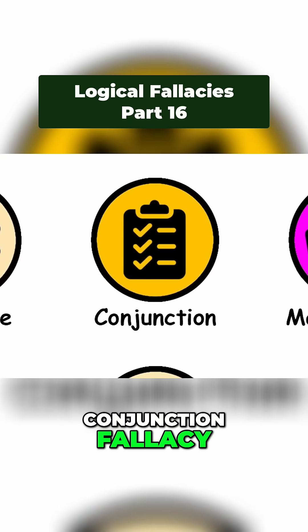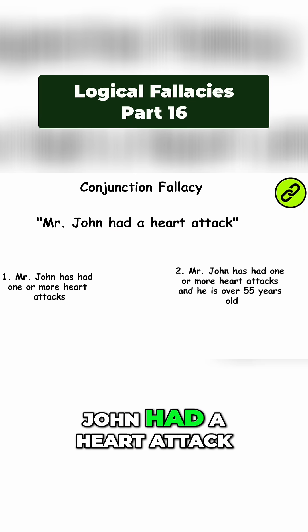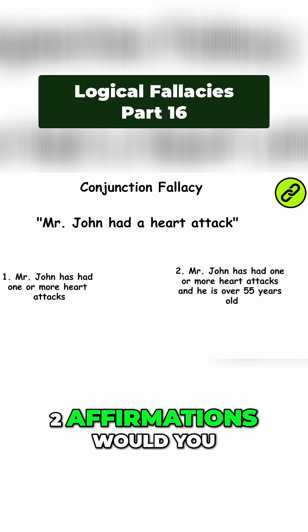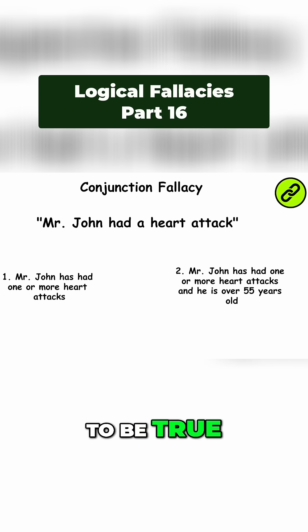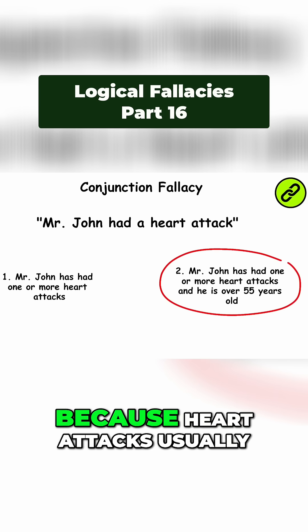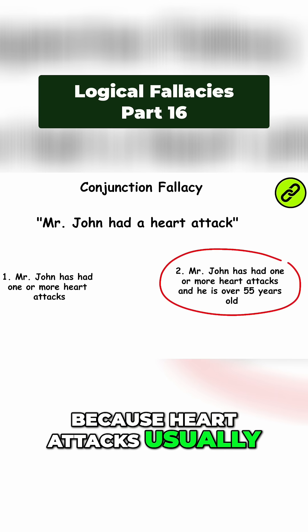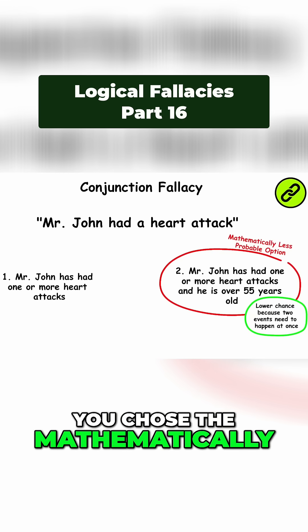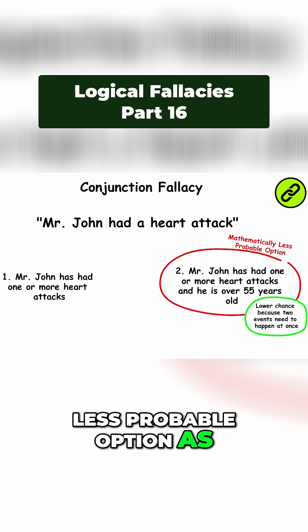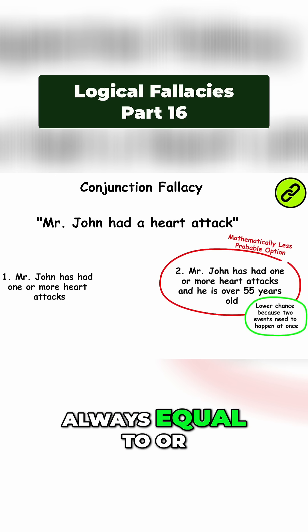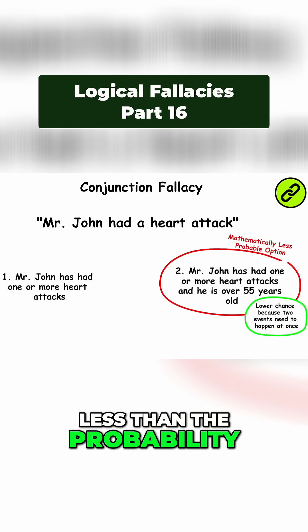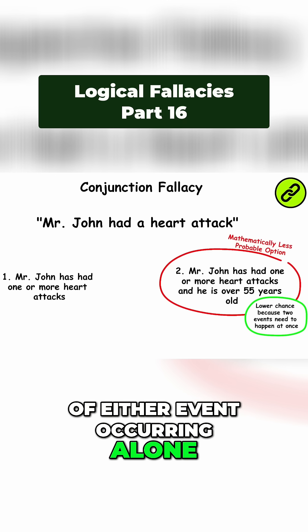Conjunction Fallacy. If I told you that Mr. John had a heart attack, which one of these two affirmations would you think is more likely to be true? If you guessed the second one, because heart attacks usually happen to older people, you chose the mathematically less probable option, as two events co-occurring are always equal to or less than the probability of either event occurring alone.